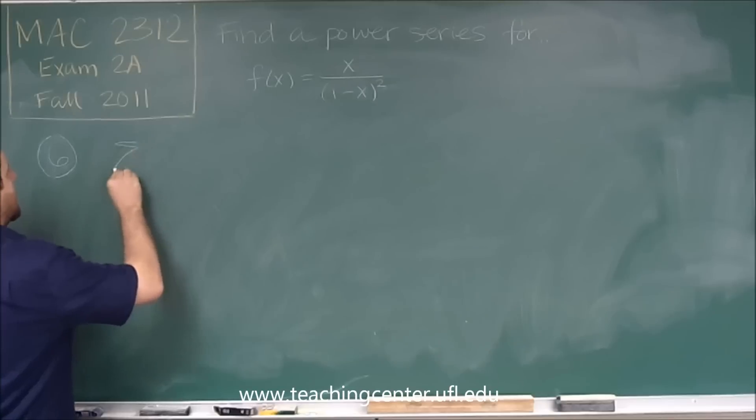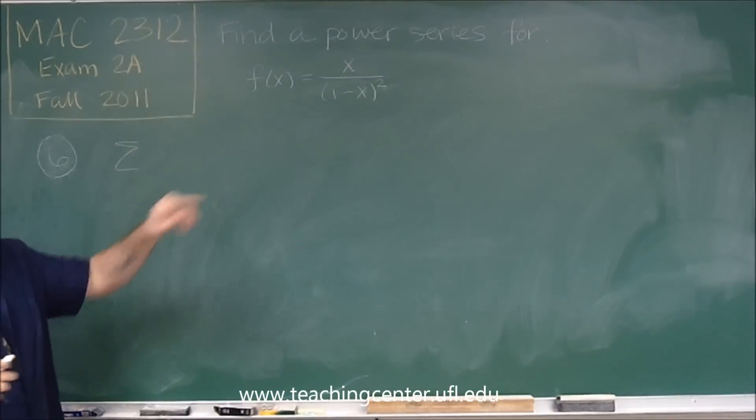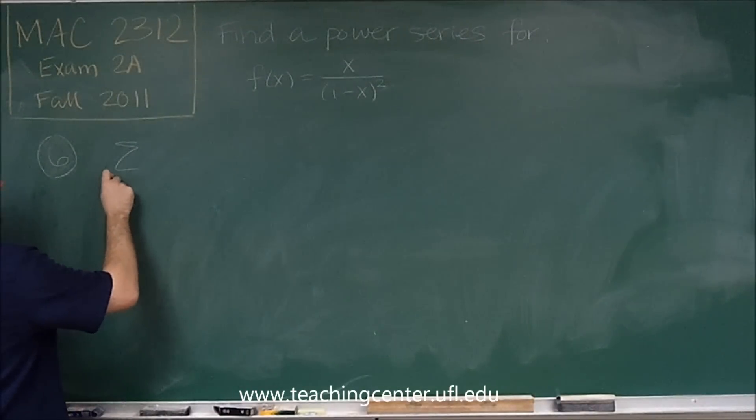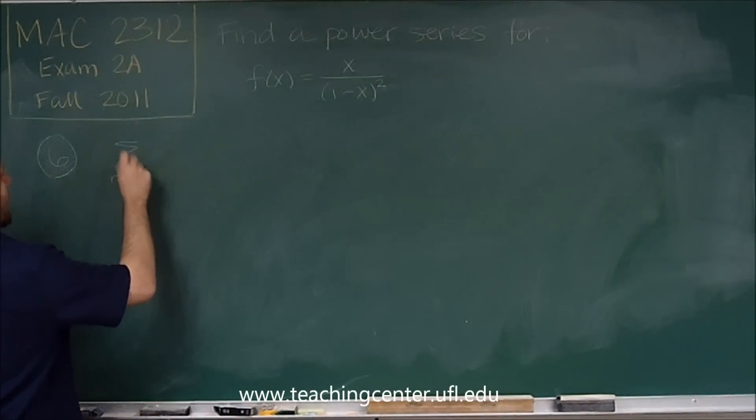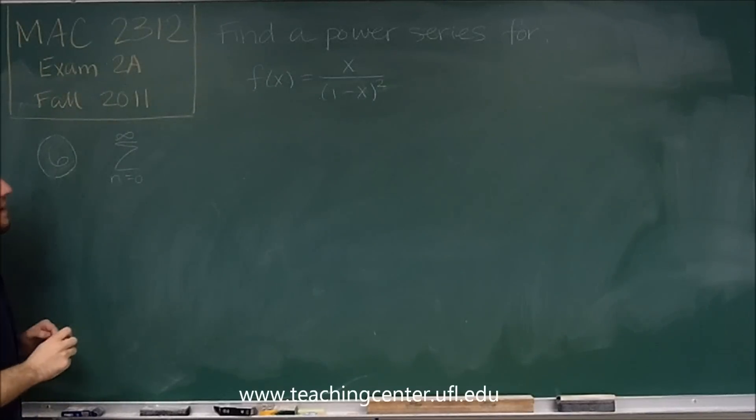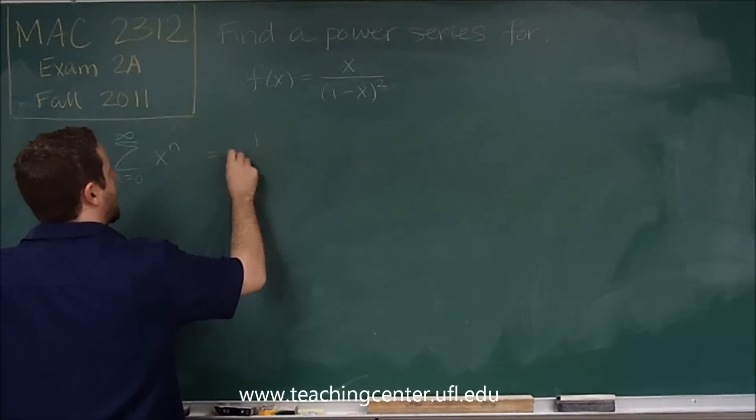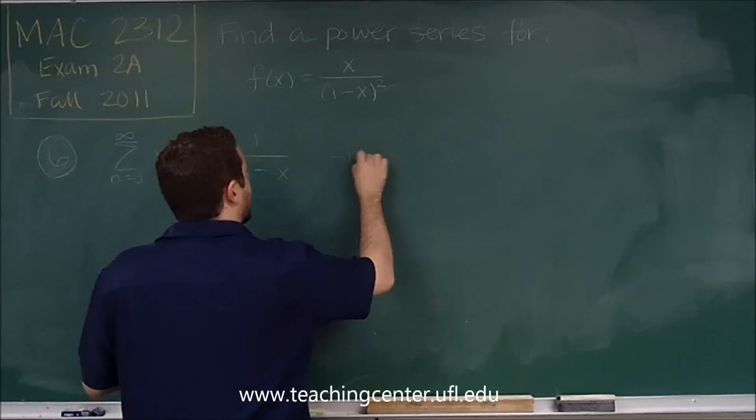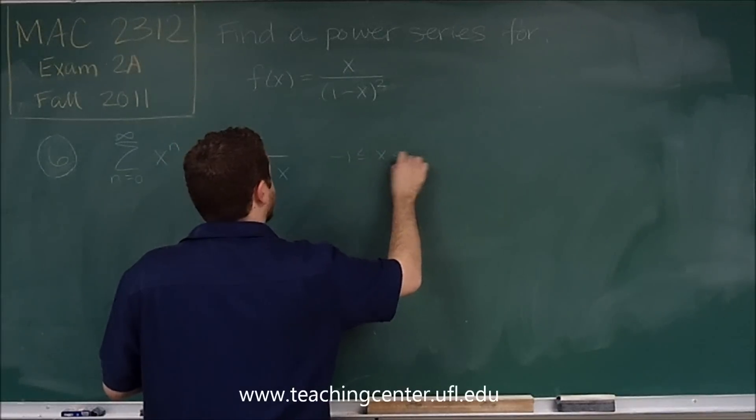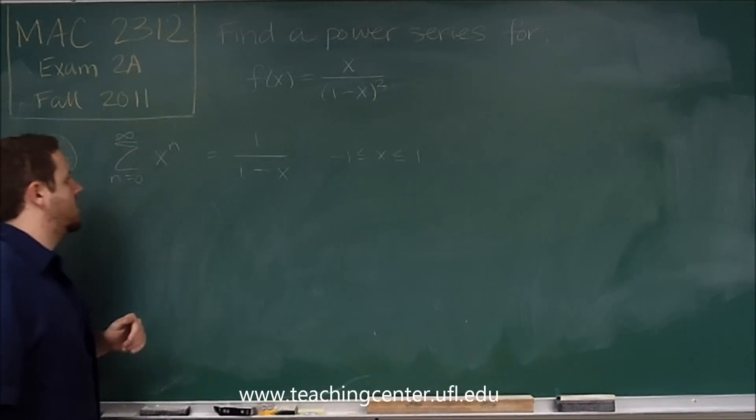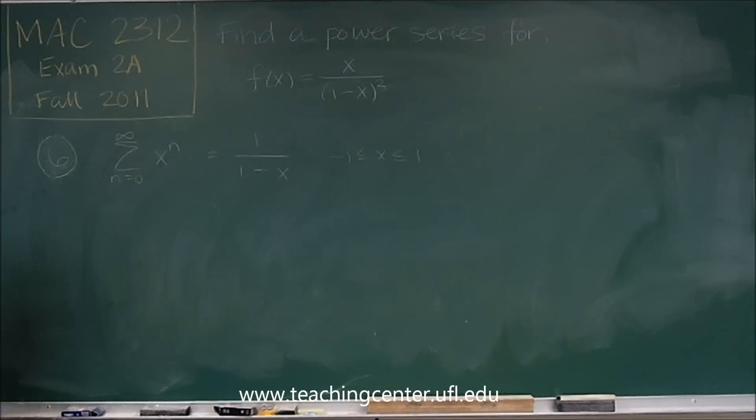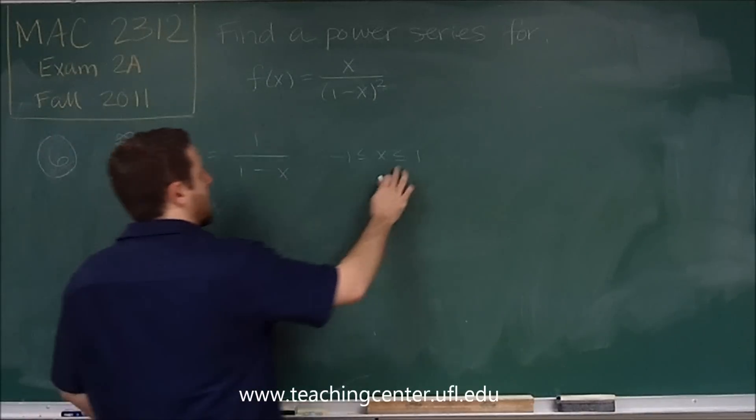So the one power series we know that would really help us with this problem is we know that the series from n equals 0 to infinity of x to the n is equal to 1 over 1 minus x for x in between negative 1 and 1, not including.